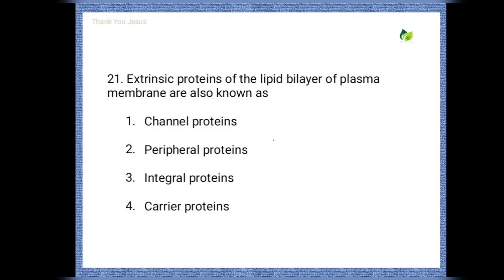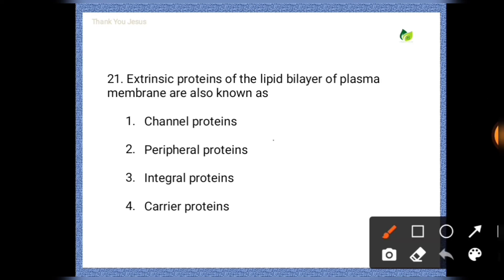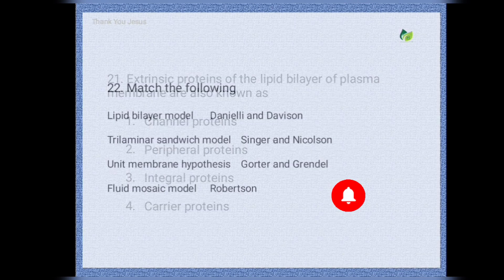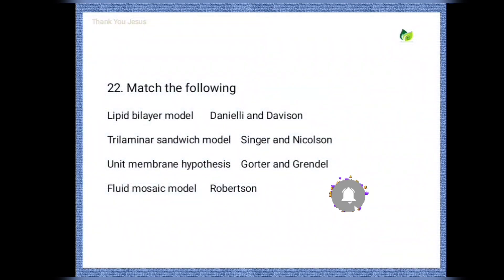Next question: Extrinsic proteins of the lipid bilayer of the plasma membrane are also known as — options are: channel proteins, peripheral proteins, integral proteins, carrier proteins. The correct option is peripheral proteins.